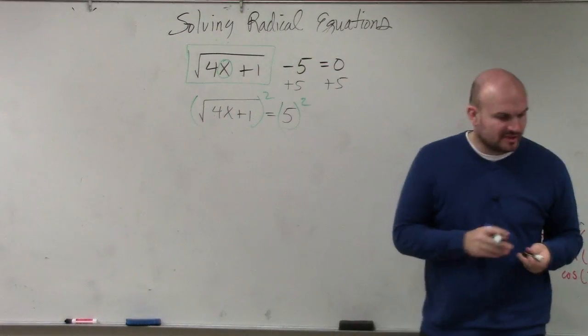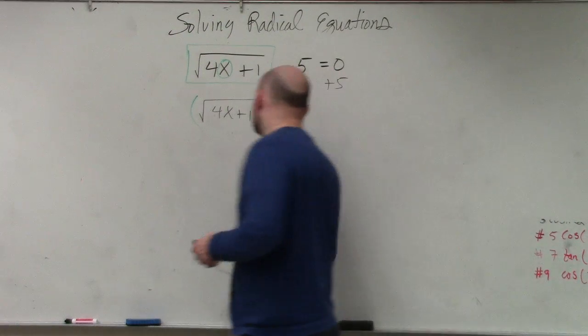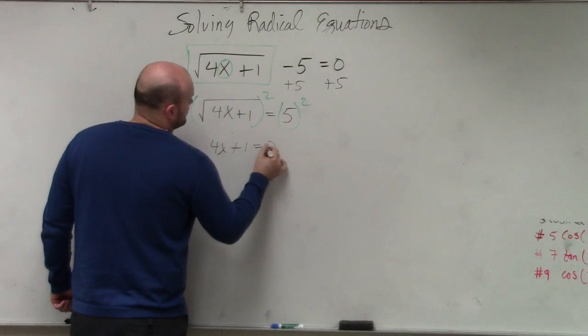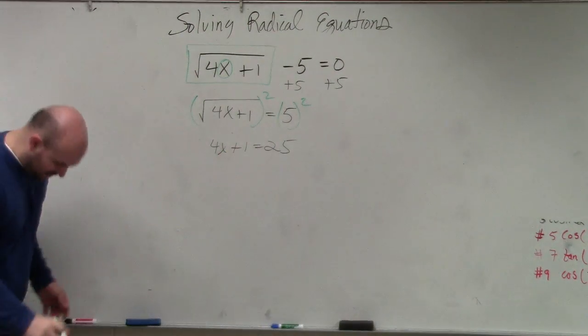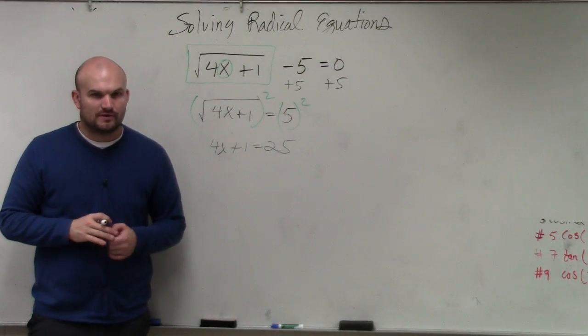So now, by doing that, the square root of something squared leaves me with 4x plus 1 equals 25. Now we have an equation that's in a format that hopefully everybody is a little bit more familiar with and comfortable solving for, correct?